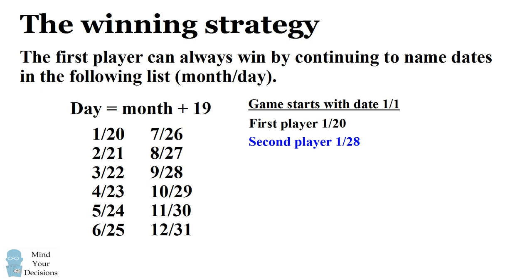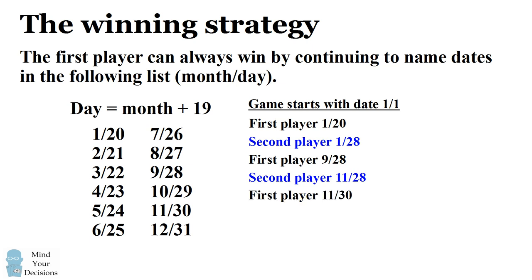So the first player thinks: how can I get to the next winning date? Scanning the list, you can see you can call out another month with the day value of 28, and that would be September 28th. So the first player calls out 9/28, and now the second player has to either choose a day that's later in September or call a future month with the same day value. Let's say the second player calls out November 28th. So the first player says, "From November 28th I can call out the next winning date, which is November 30th."